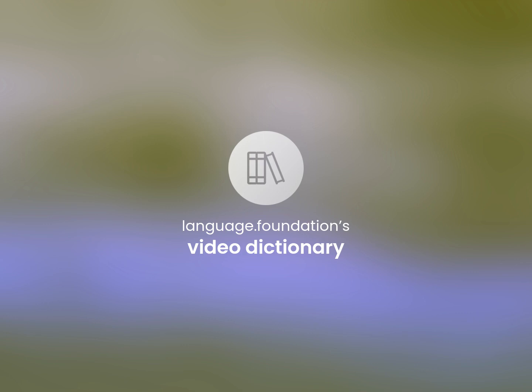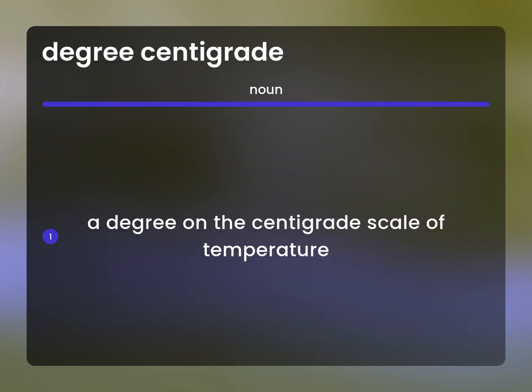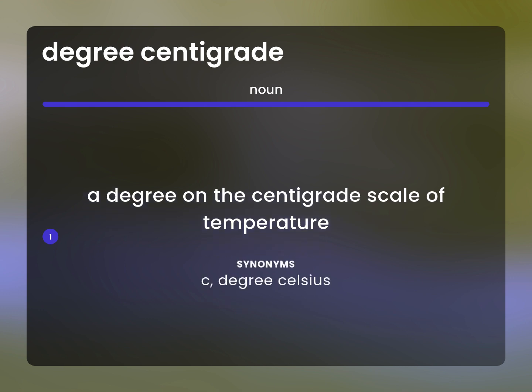Language.Foundation's Video Dictionary, helping you achieve understanding. Degree Celsius: a degree on the centigrade scale of temperature. Symbol: C.